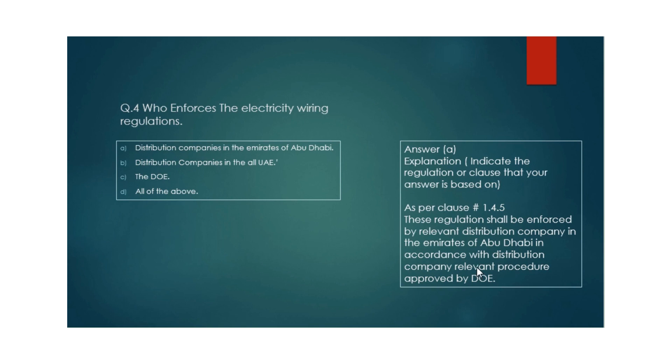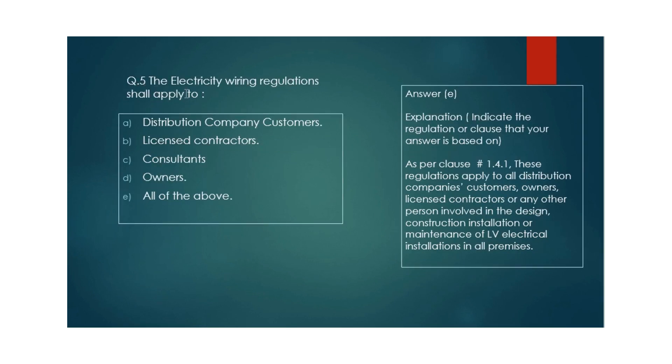Question 5: The electricity wiring regulations shall apply to whom? Options: distribution company customers, licensed contractors, consultants, owners, or all of the above. The answer is option E, all of the above.